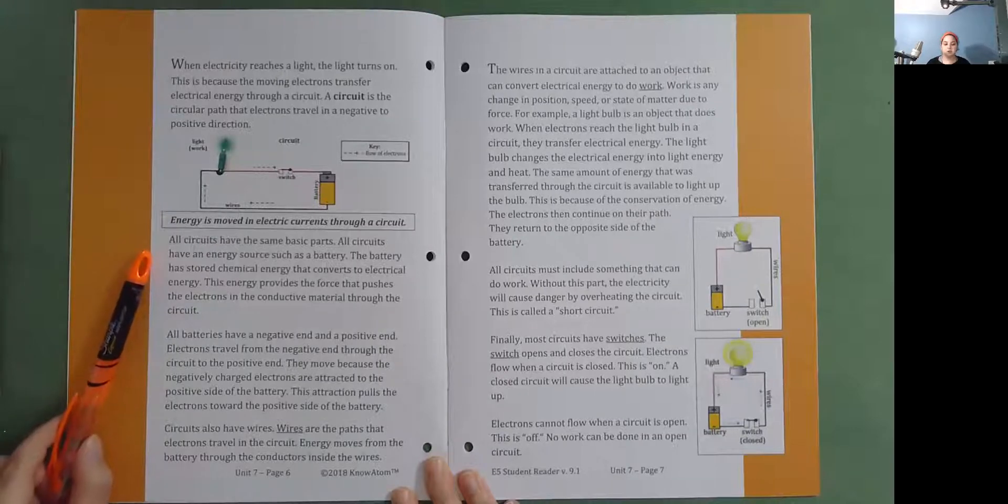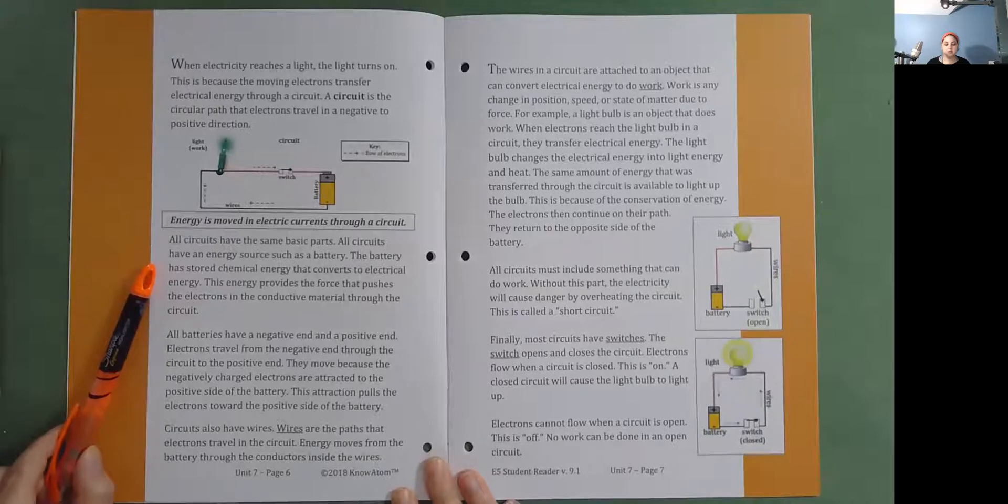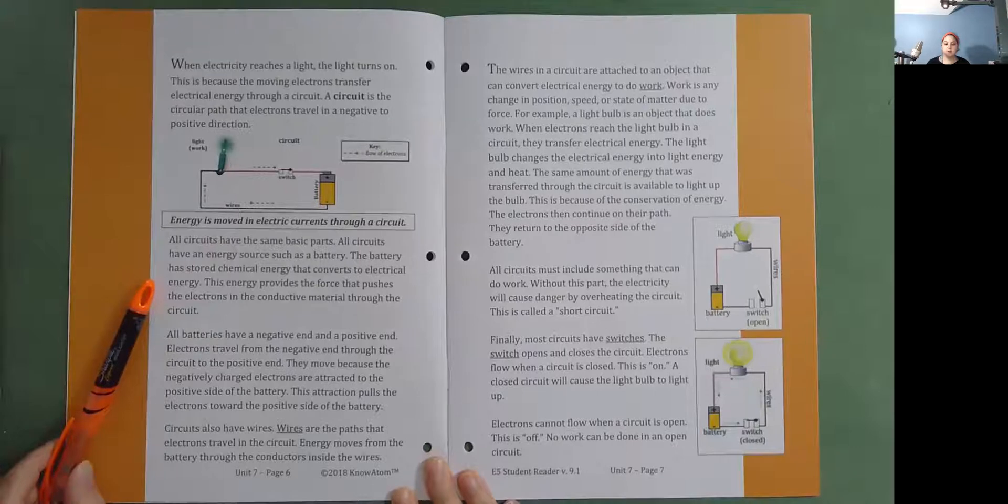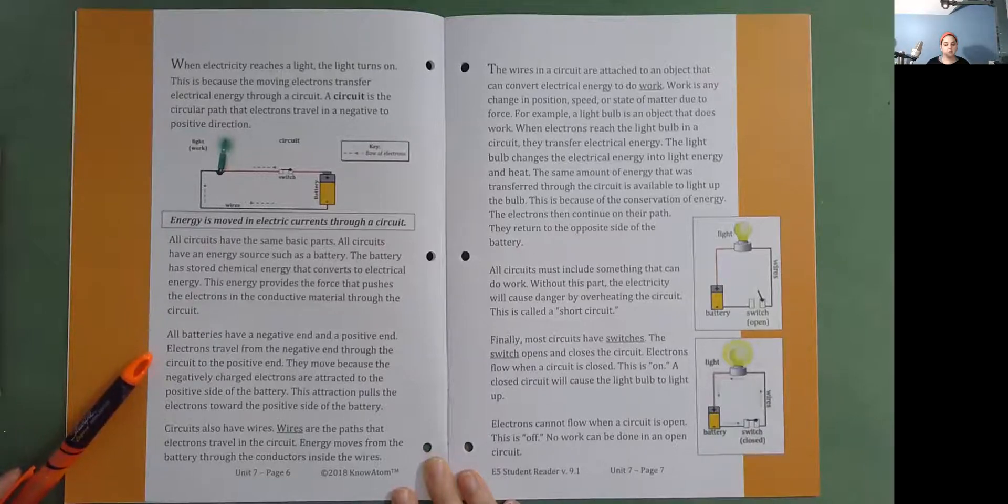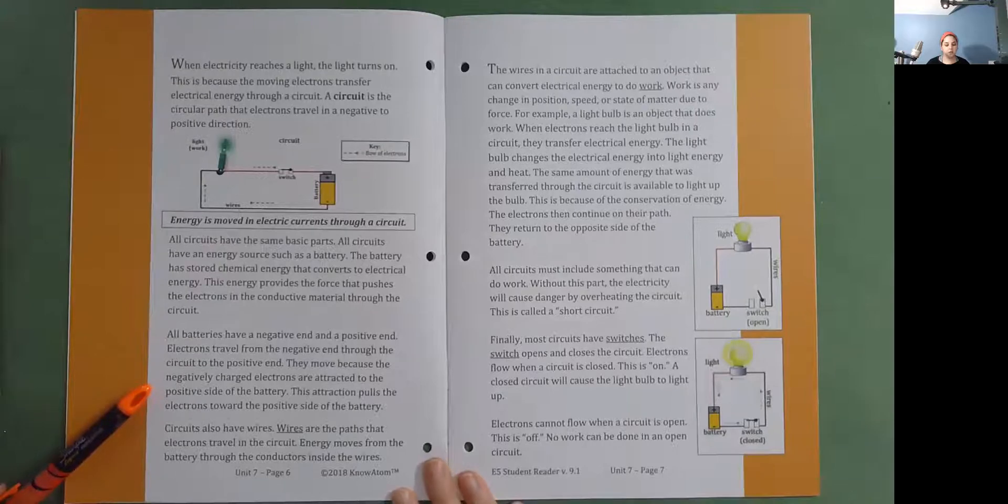All circuits have the same basic parts. All circuits have an energy source such as a battery. The battery has stored chemical energy that converts to electrical energy. This energy provides the force that pushes the electrons in the conductive material through the circuit. All batteries have a negative end and a positive end. Electrons travel from the negative end through the circuit to the positive end. They move because the negatively charged electrons are attracted to the positive side of the battery. This attraction pulls the electrons toward the positive side of the battery.